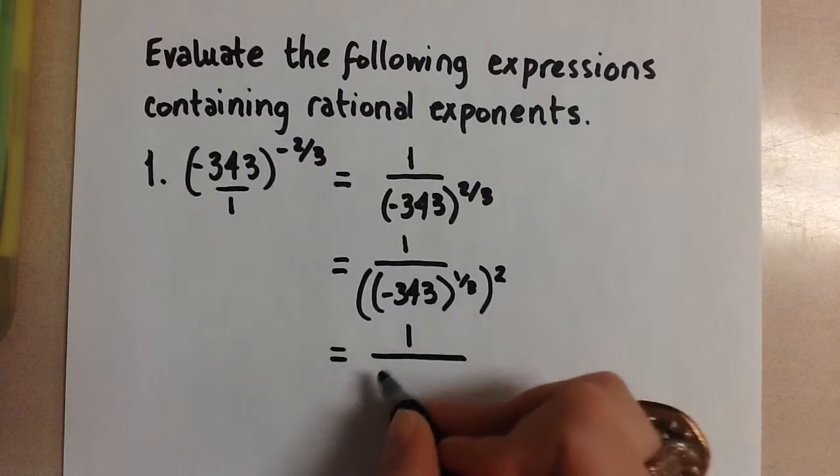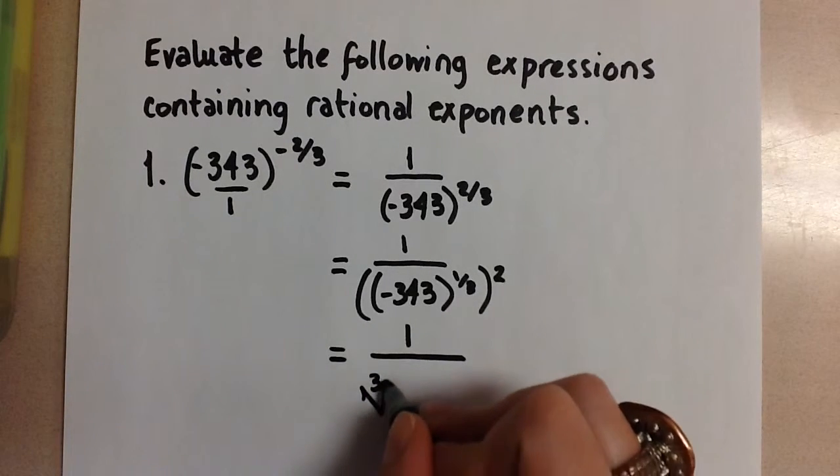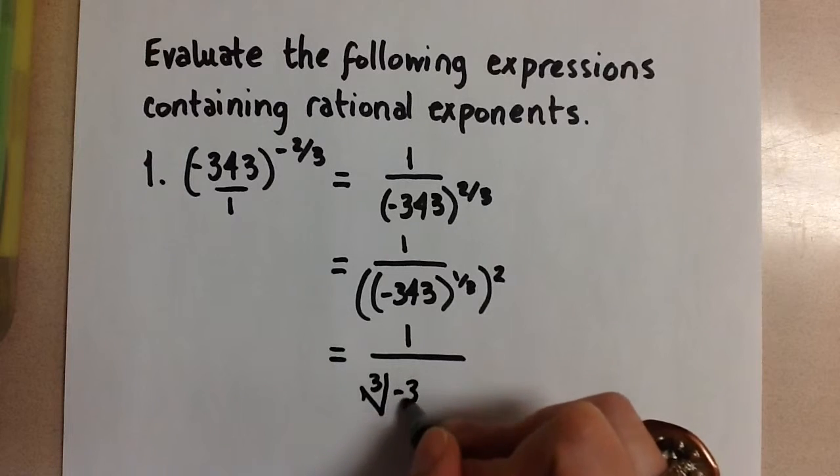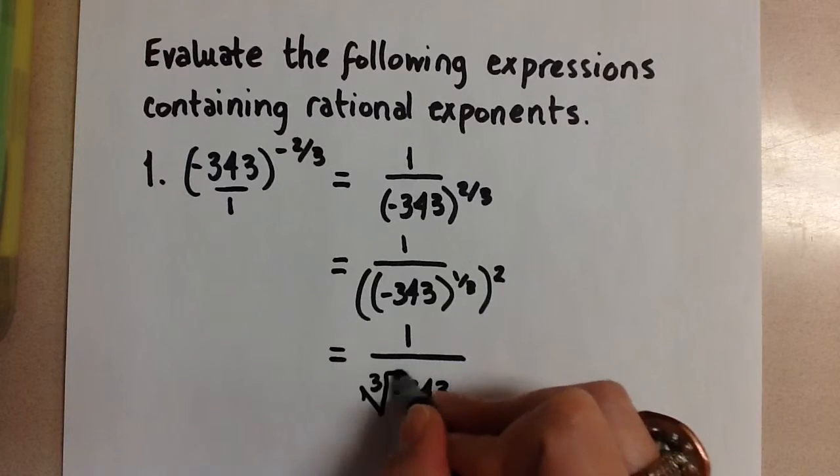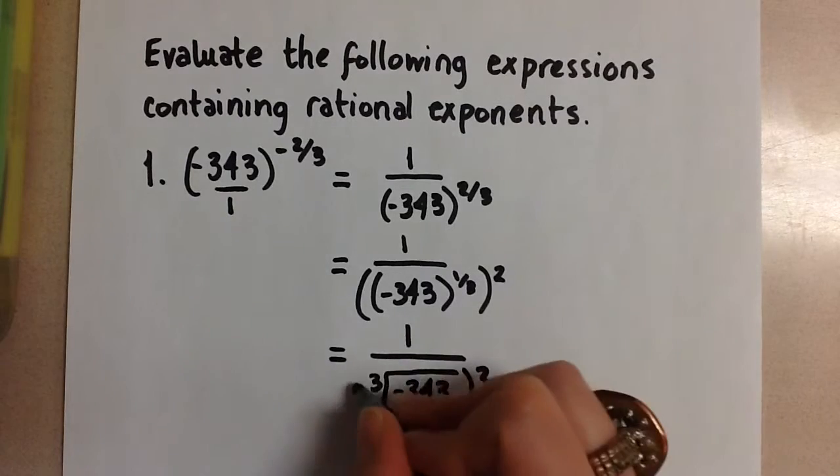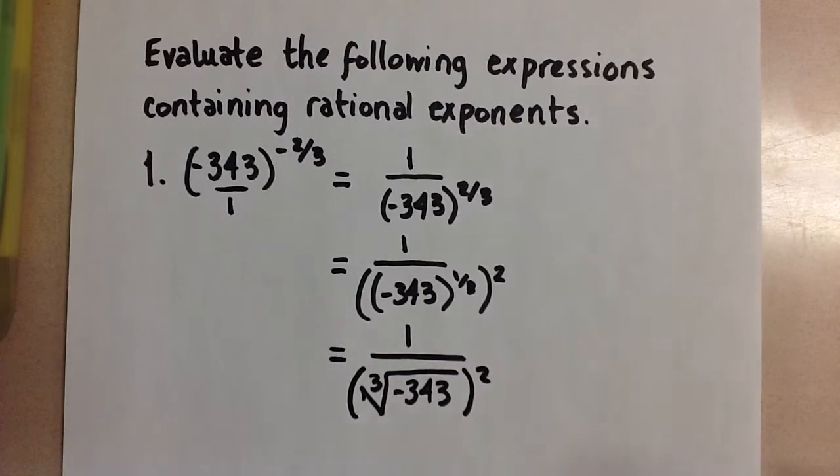This 1 third is the same thing as taking the cubed root of negative 343 and then squaring the number. So we have the cubed root here of a negative number, but we know because that root is an odd number, we can take the root of a negative number. If that was an even root, we wouldn't be able to take the even root of a negative number. For odd numbers we can do this.